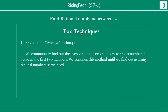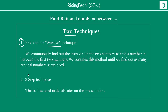There are actually two techniques to find out all the rational numbers between two given rational numbers. The first technique is called the average technique, and the second technique is called the two-step technique. We are going to learn the two-step technique later on, but today we are going to focus on the average technique.